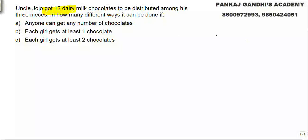In all we have got 12 identical chocolates to be distributed among 3 nieces. Let's build up the concepts first. Let's say first niece gets A number of chocolates, second B, third C total 12.